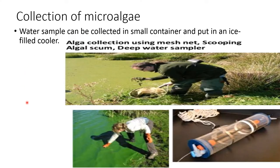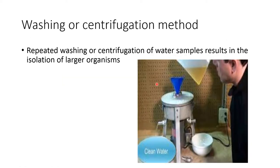Now we will study about the collection of microalgae, isolation, and cultivation, which come under the conventional method. The water sample can be collected in a small container and stored in an ice cooler, or the algae can be collected using a mesh net, scooping the algal scum, or using a deep water sampler.